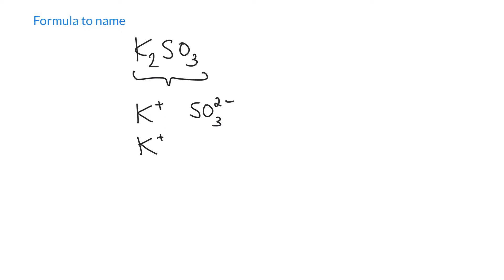And the name of it: K is potassium. Does it have a variable charge? If it did, we'd need to include it, but it doesn't, so we don't need to say potassium one or anything like that. SO3 2- is sulfite, so this would be called potassium sulfite.